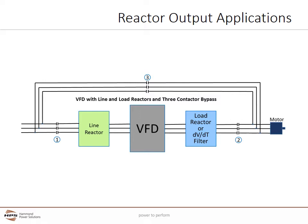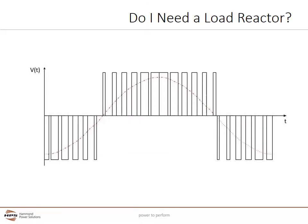Now let's discuss the benefits of load reactors between the VFD and the motor. Load reactors are found in the output of a VFD between the VFD and the motor. HPS Centurion line reactors are designed so the same line reactor can be used on either the load or line side of the VFD without any derating. By varying the width of DC pulses on the output of a VFD, a VFD simulates a wide range of frequencies to control motor speed. This PWM wave can cause problems with cabling and the motor—the motor runs hotter, sounds louder, and there is often a high-pitched whine.